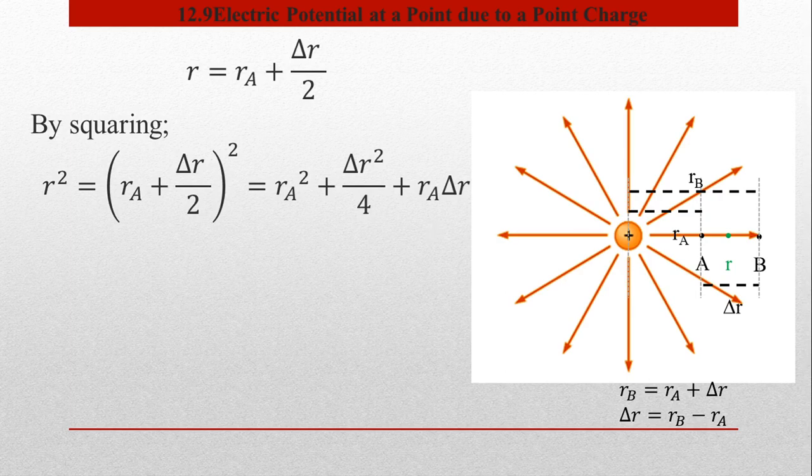اب تک ہم نے figure سے algebraically solve کر لیا ہے۔ مزید simplify کرنے کے لیے — جیسا کہ پہلے بھی discuss کیا گیا ہے — A اور B بہت close ہونے چاہئیں تاکہ ان کے درمیان field almost uniform ہو۔ لہٰذا approximation یہ apply کریں گے کہ delta R بہت small ہے اور zero کو approach کر رہا ہے۔ اس approximation میں delta R² کو neglect کر سکتے ہیں: مثلاً اگر delta R = 0.1 ہو تو delta R² = 0.01 ہوگا، جو کہ اور بھی چھوٹا ہے۔ لہٰذا delta R² کو یہاں ignore کر سکتے ہیں۔